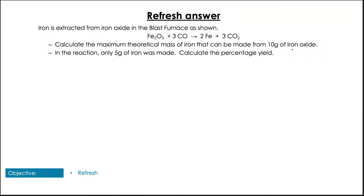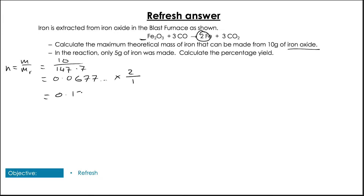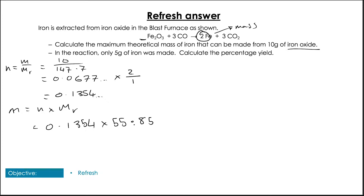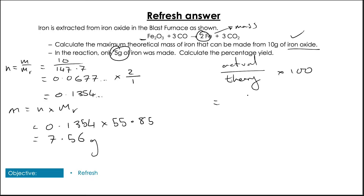Okay, let's go through that. Firstly, we've got to calculate the number of moles that 10 grams of iron oxide would be, which is 0.0677, and multiply it by the ratio, and that gives us 0.1354. Now, it asks us for a mass of iron, so we're going to do mass equals number of moles times the molecular mass of iron, and that gives us 7.56 grams. The second part asks about percentage yield, so we just do actual divided by theoretical, multiplied by 100, which gives us 66.1%.